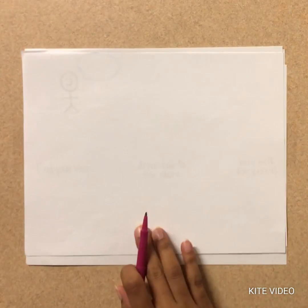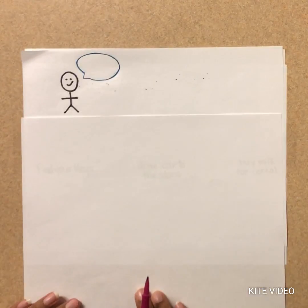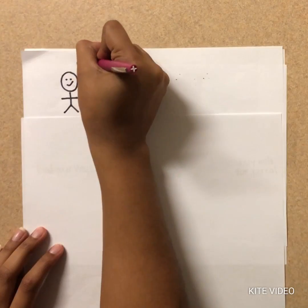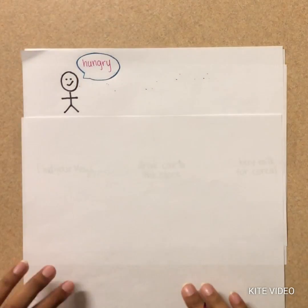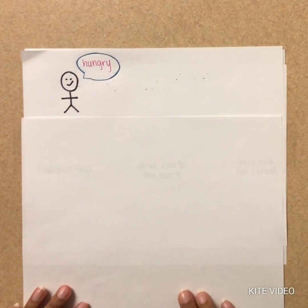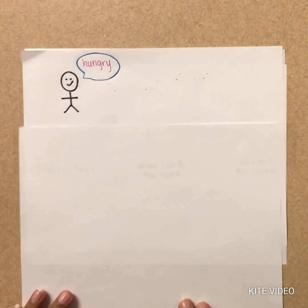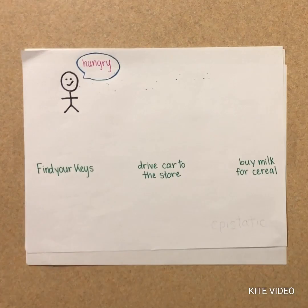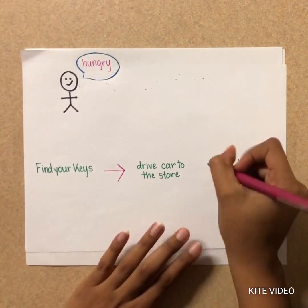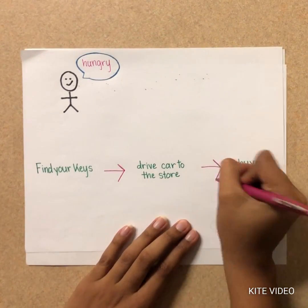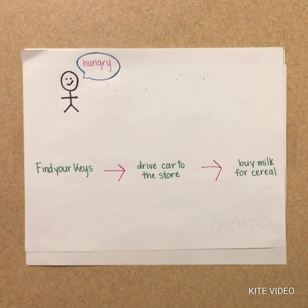To better understand this concept, we can think about it like this. Say you want a bowl of cereal but you're out of milk. In order to get the milk, you need to go to the store, but to do that you need to first find your keys, then drive your car to the store, and finally buy the milk for the cereal.